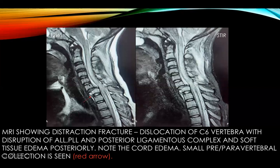This case shows distraction fracture-dislocation of the C6 vertebra with disruption of all three columns — the ALL, PLL, and posterior ligamentous complex. There is cord edema along with a tiny pre-vertebral collection, as depicted by the arrow.